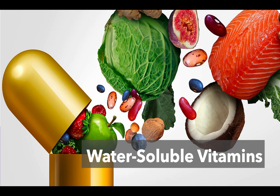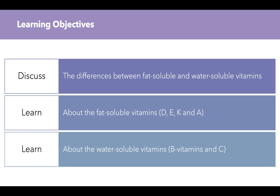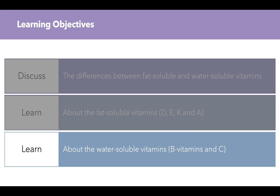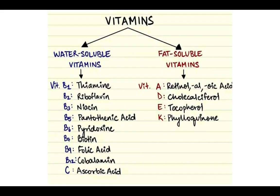Welcome to the second video for chapter 7 where we're going to talk about water soluble vitamins. The learning objective is to learn about the water soluble vitamins including B vitamins and vitamin C. We already learned about the differences between fat soluble and water soluble vitamins and the fat soluble vitamins in part 1 of this chapter. The fat soluble vitamins we talked about included A, D, E, and K.